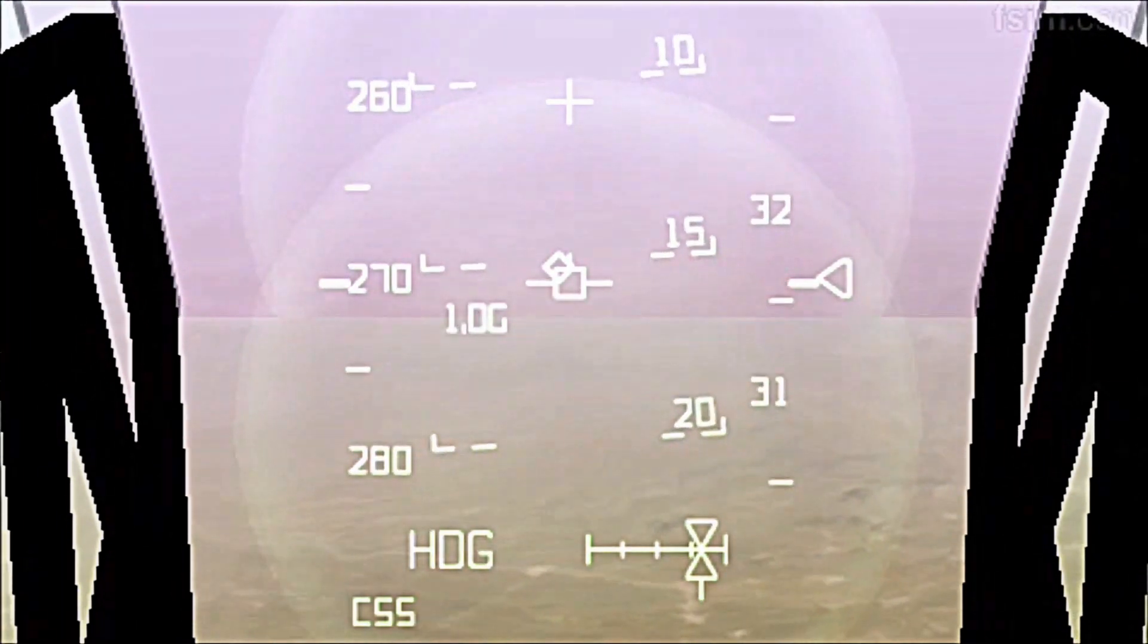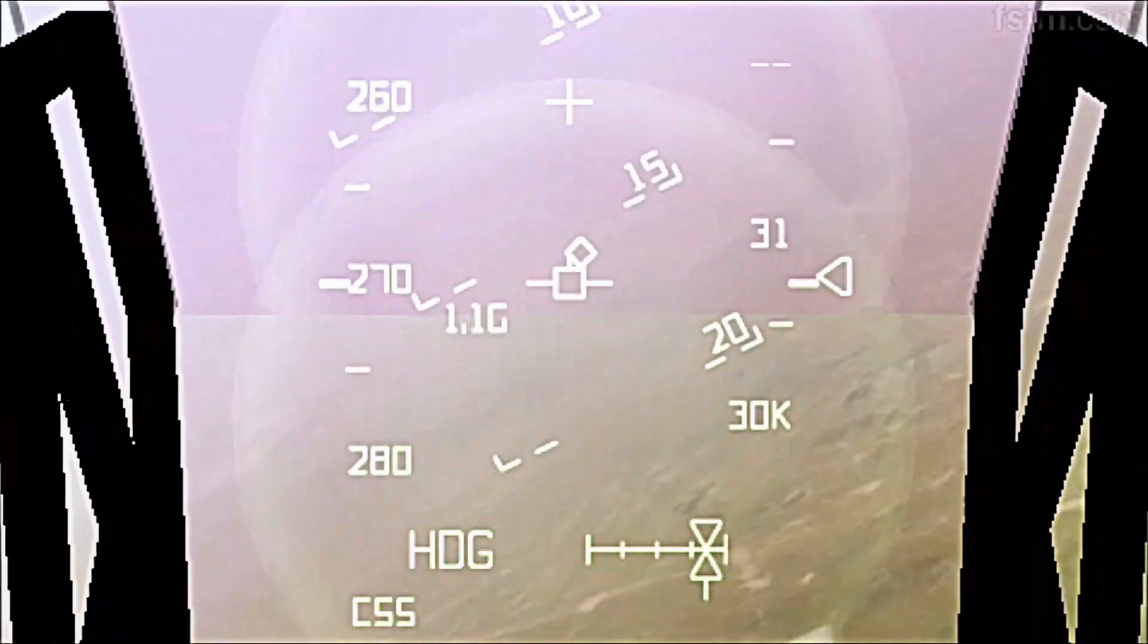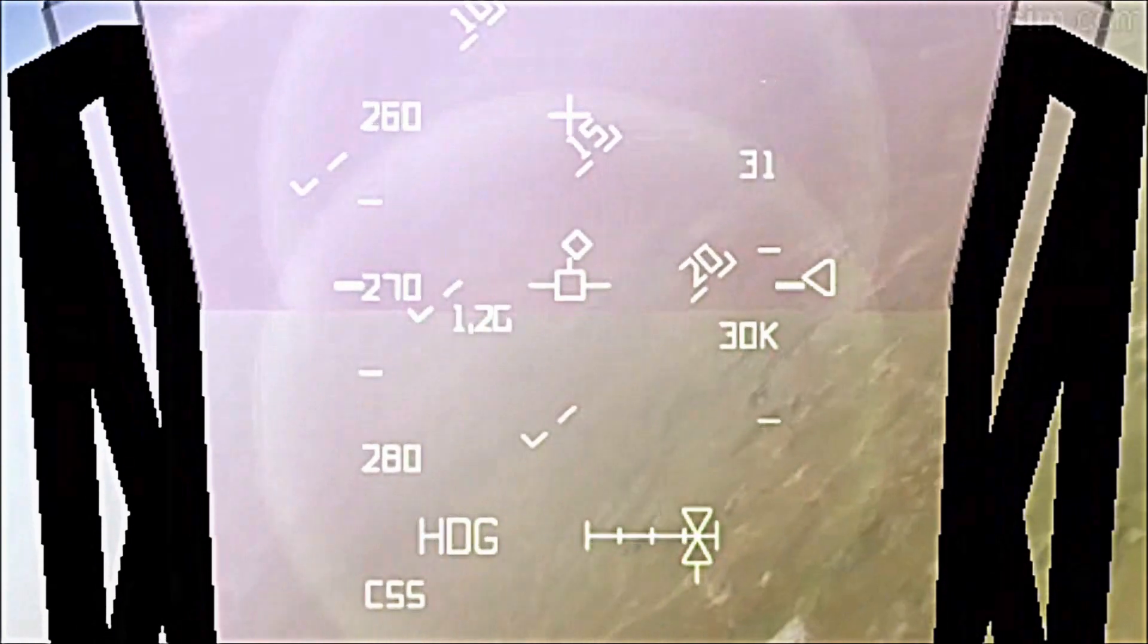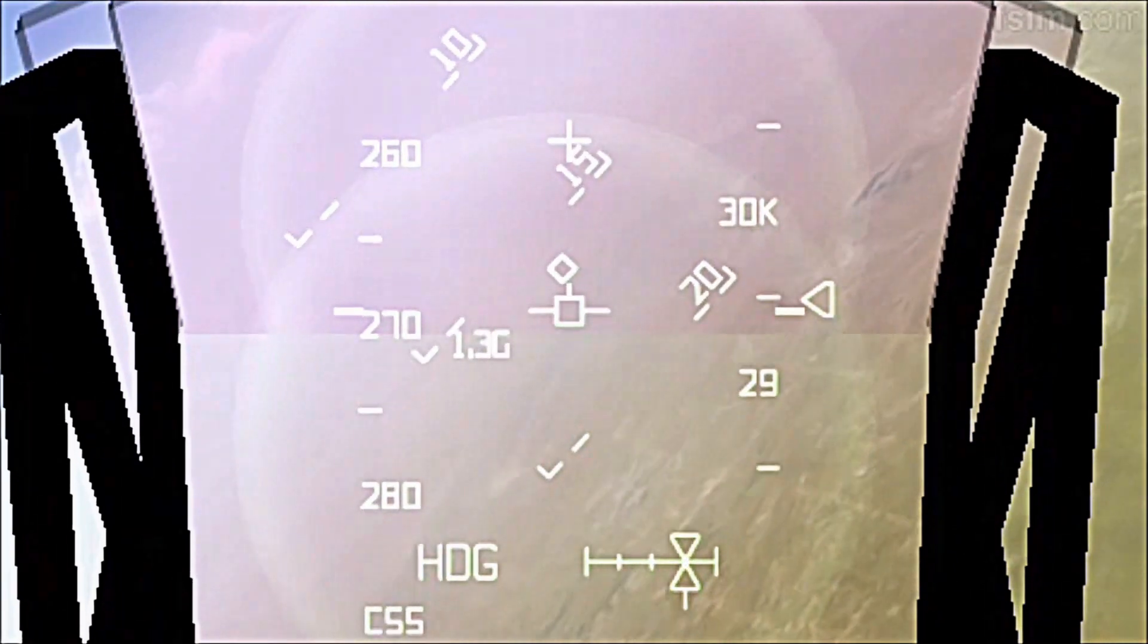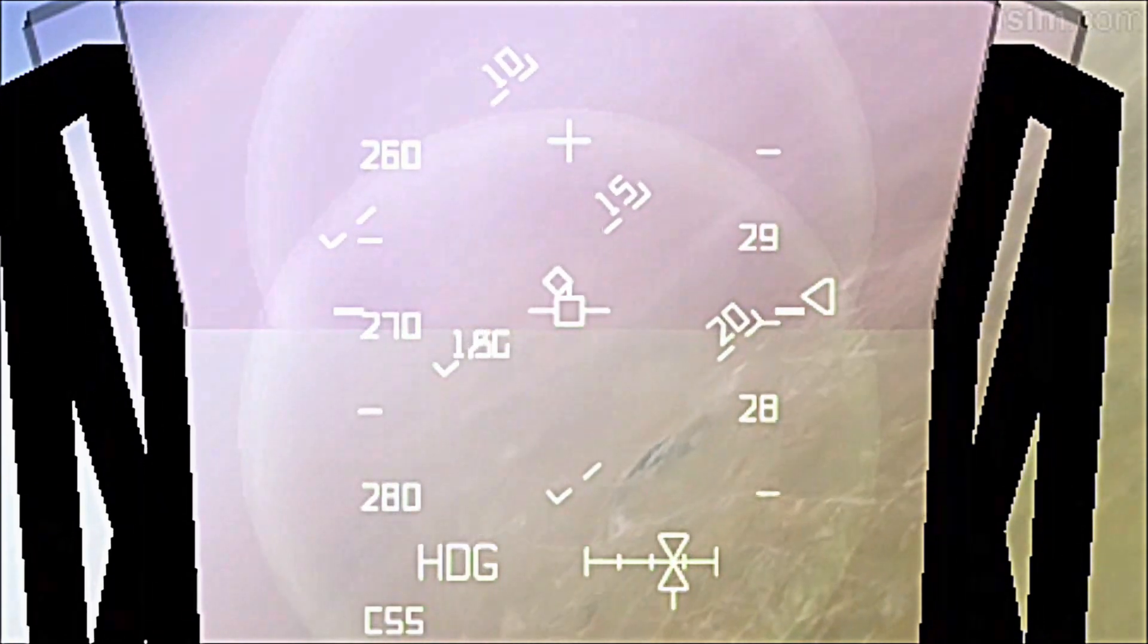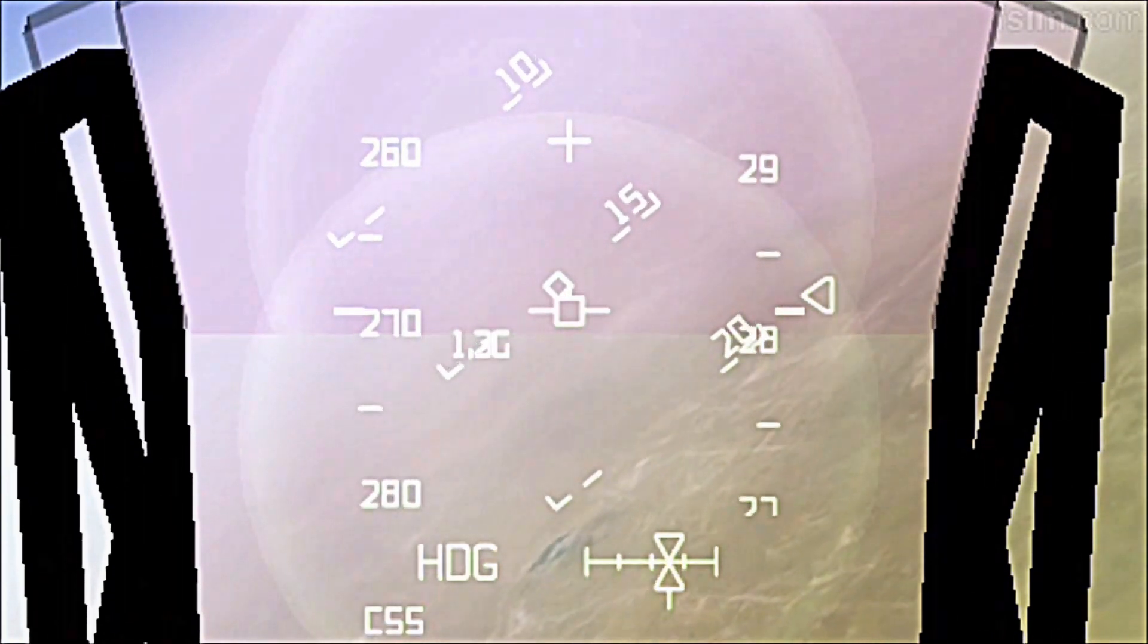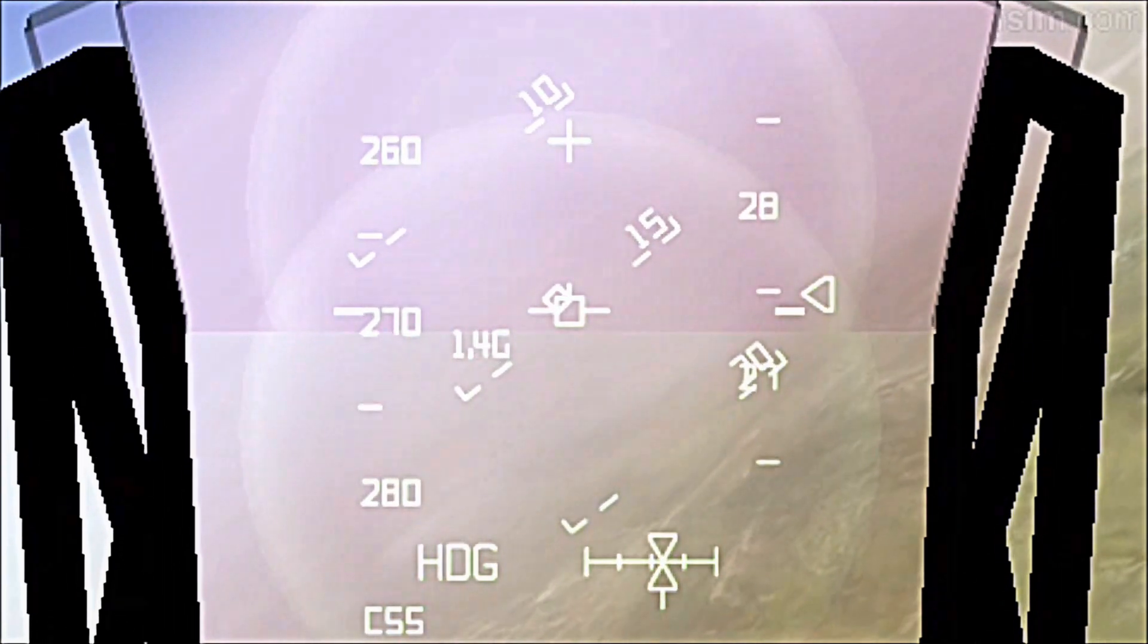5 seconds. 4, 3, 2, 1. C is starting a right turn. Going to the needles. They're centered. Looking real nice. There you go. 1.15 Gs. Looking real good, Taco. Keeping the needles centered. That's great.